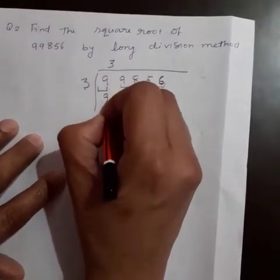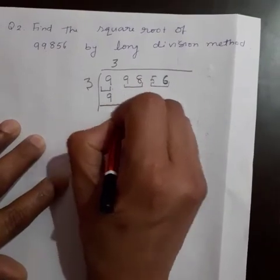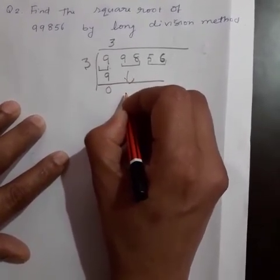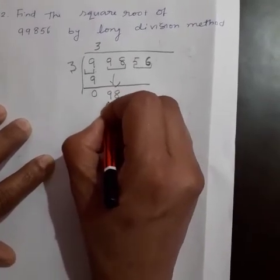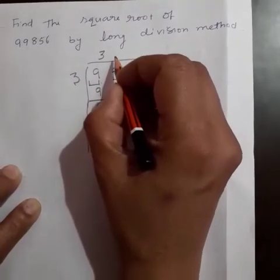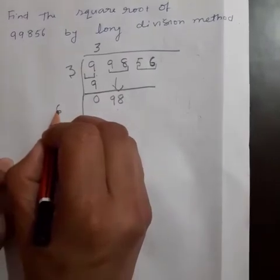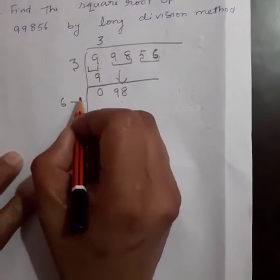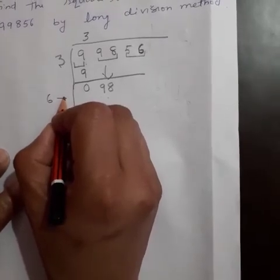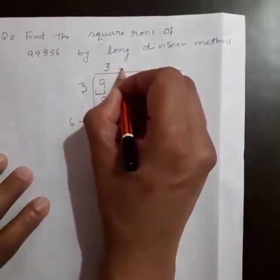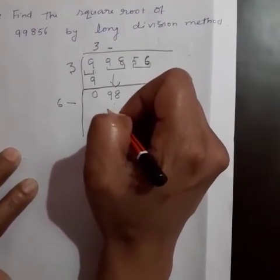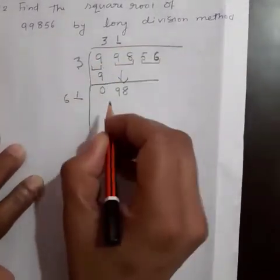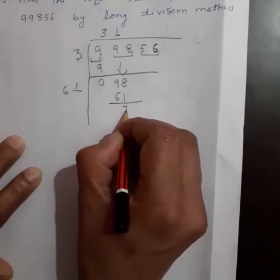Multiply 3 by 3, which equals 9, and write it just below the first period. The remainder is 0. Bring down the next period 98 to the right of the remainder — 98 is the new dividend. Multiply the current quotient 3 by 2, which equals 6. Write 6 as the divisor with a blank on its right. The largest possible digit for the blank such that the product of the new divisor and that digit is equal to or just less than 98 is 1. Multiply 61 by 1 — we get 61. The remainder is 37.